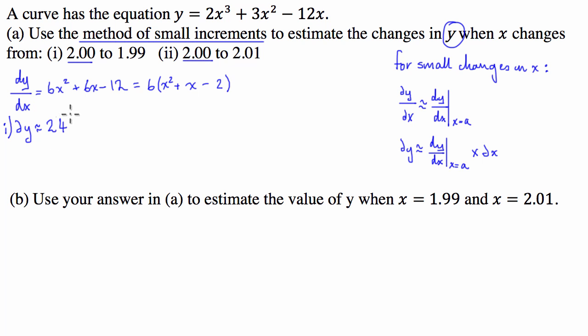So that's our derivative or our gradient at x equals 2. So this is for the first one. Then we have to multiply that by the change in x, which is -0.01, and that's going to be negative 0.24.